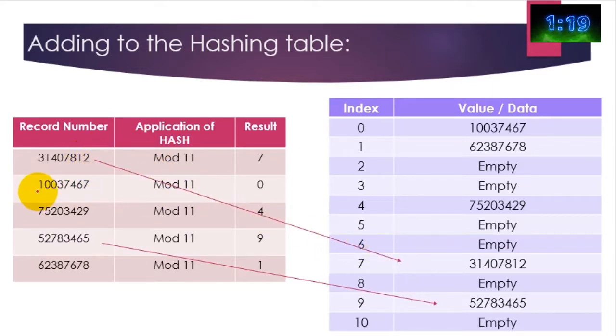In the same way, this value here going through modulo 11 produces the index of zero or the hash value of zero, and therefore this value here, 10037467, that one there is stored here. In the same way, this particular record, after it's gone through the modulus 11 system, produces a result of nine, and the nine is over here and it's stored in slot number nine. So basically whatever the result of the hash value is, it is used as the index to where the data is stored.